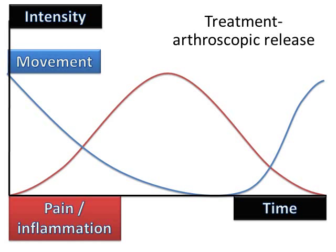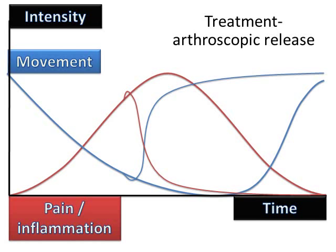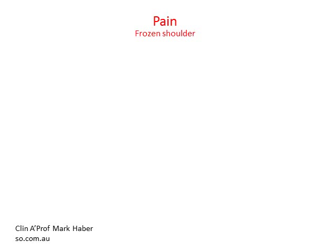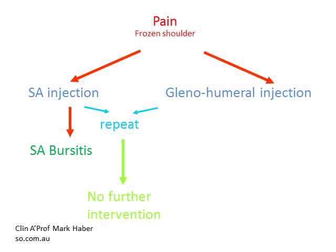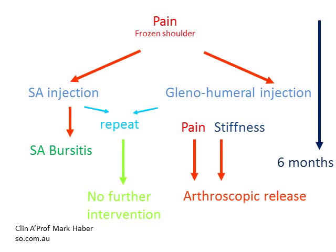If these treatment options don't help, we consider an arthroscopic release, which can dramatically reduce your pain and restore your movement within weeks. In terms of the treatment algorithm: we try a cortisone injection either into the subacromial bursa or the glenohumeral joint. If the bursal injection helps, it's not a frozen shoulder — it's a bursitis. Whichever injection does help, it can be repeated if necessary, and in a frozen shoulder we often only have to repeat the injection once. If things settle, no further intervention is required. However, if six months pass by and you are still very painful and stiff, we can consider the procedure of an arthroscopic release, which will be discussed in a further video.